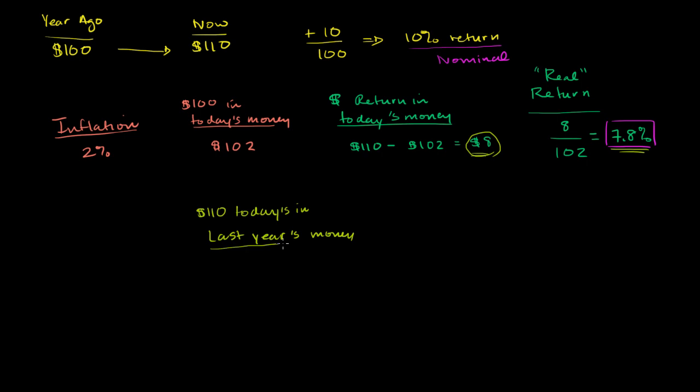And to think about this, we could do a little algebra, or you don't have to do algebra, but maybe that makes it a little bit more intuitive. There's some amount of money last year, some amount of money, and let's call that x, that if we multiply it by the inflation rate, so if we grow it by 2%...